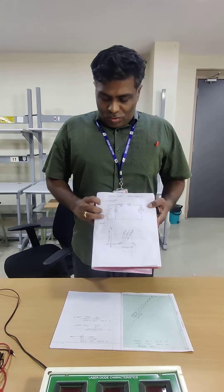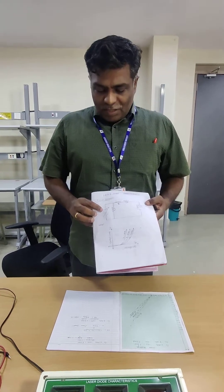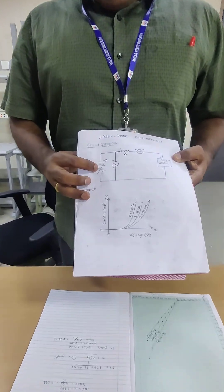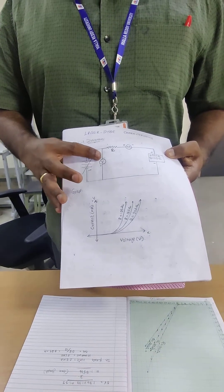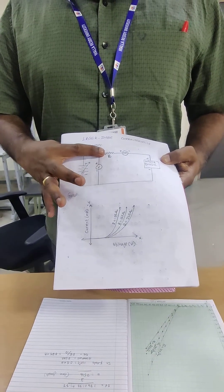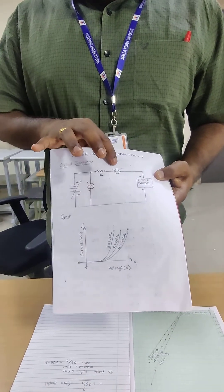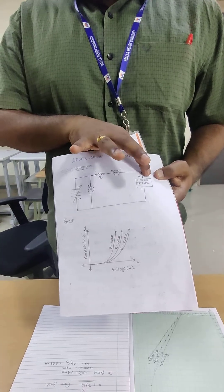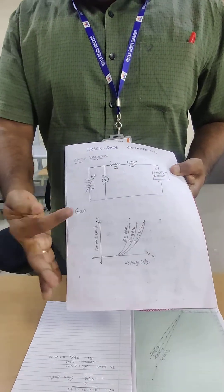We have a circuit diagram. In that circuit diagram, this is the battery. It is connected with the voltmeter and the resistor, then the milliammeter, then the laser diode. All the negatives are connected.